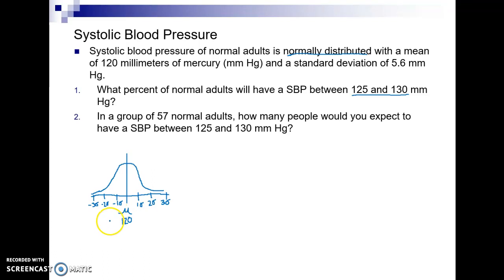Next we are asked to consider values between 125 and 130 so we're going to need the Z-score for those. So Z-score formula is the data value minus the mean divided by the standard deviation. So finding Z we take 125 minus the mean of 120 divide by the standard deviation of 5.6 and that gives us a value of 0.9.